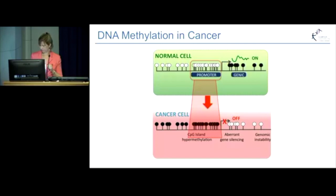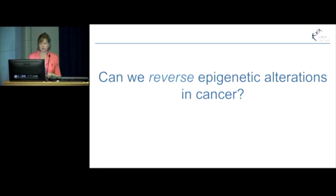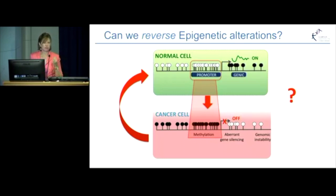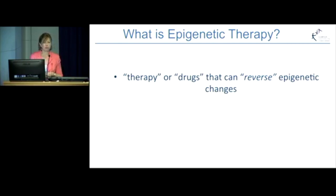A key question we and many others around the world have had for a long time is: can we reverse epigenetic alterations in cancer? So if we go back to the picture of the normal cell — unmethylated — and the cancer cell — methylated — the question we've been asking is, can we reverse the cancer methylation pattern to a more normal cell pattern? There's been great interest to find drugs or therapies that can actually do this, and this is what we call epigenetic therapy — therapy or drugs that can reverse these epigenetic patterns or changes observed in diseased cells.